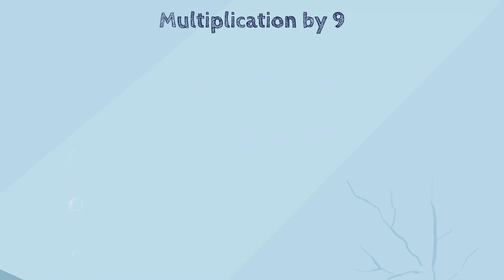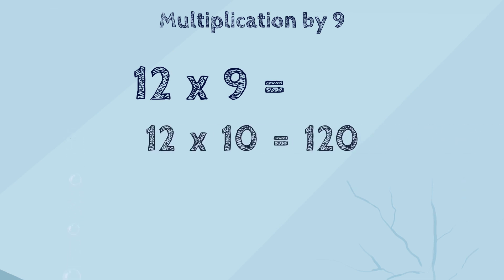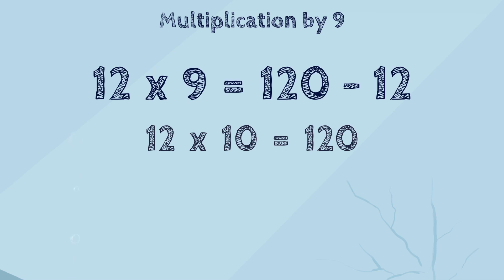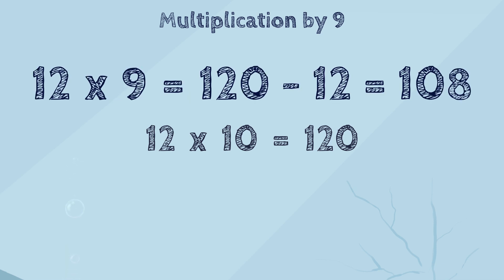Kelly, try to solve twelve times nine. Well, twelve times ten is one hundred and twenty, and then we need to subtract twelve from it. One hundred and twenty minus twelve is one hundred and eight. So that means twelve times nine is one hundred and eight. Yes, that's right, Kelly! Great job!